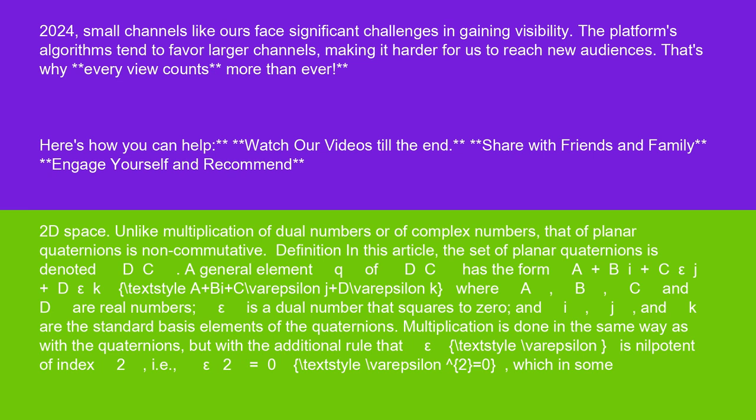Definition: In this article, the set of planar quaternions is denoted DC. A general element Q of DC has the form A plus Bi plus C epsilon J plus D epsilon K, where A, B, C, and D are real numbers. Epsilon is a dual number that squares to zero.